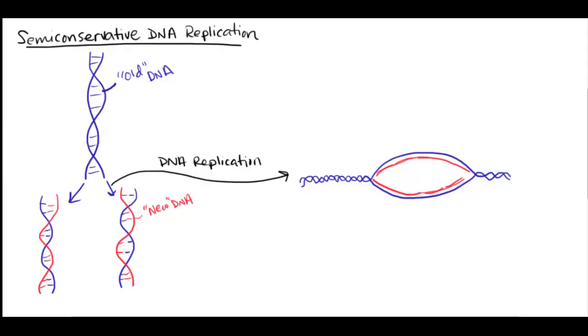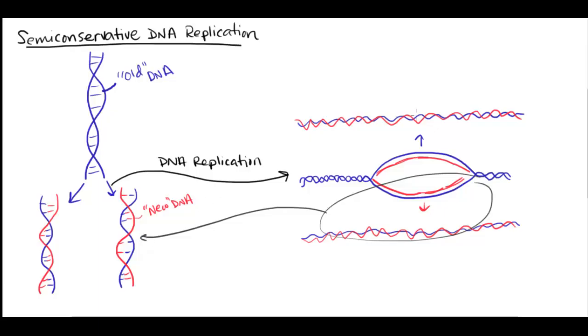So that when the cell is done, they'll have down here one DNA double helix. It has an old strand and a new strand. And up here it'll have a DNA double helix with an old strand and a new strand. And these are the same strands that we're looking at here.